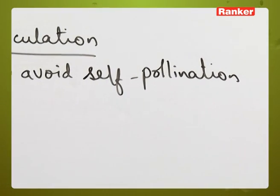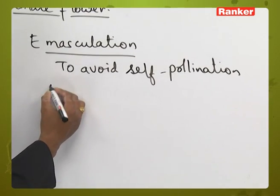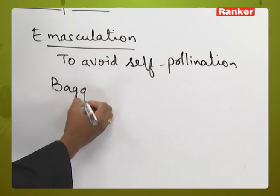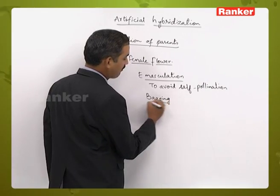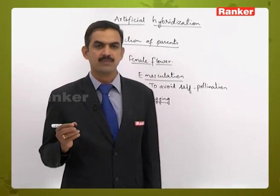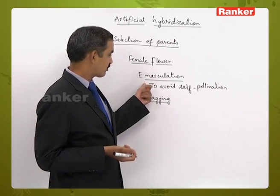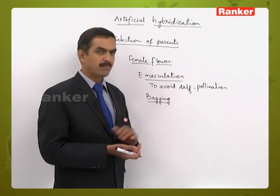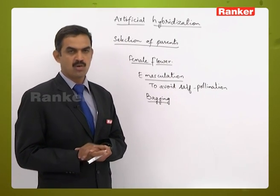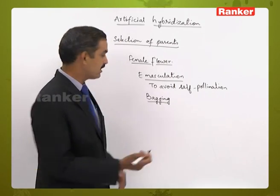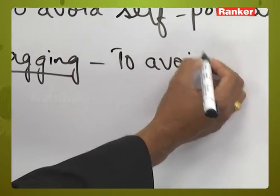After emasculation, the emasculated female flower has to be covered with a plastic cover — this is called the bagging process. Bagging is done to avoid any unwanted cross-pollination from other plants.